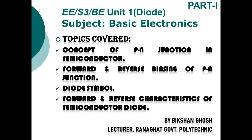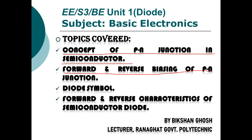Dear students, today in this video lecture we are going to start with the subject basic electronics. This is the first unit on diodes. The topics we are going to cover in this video are: concept of P-N junction in semiconductor, forward and reverse biasing of P-N junction, diode symbol, and forward and reverse characteristics of semiconductor diode.